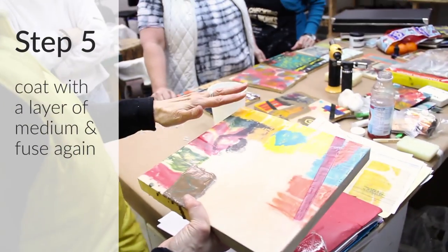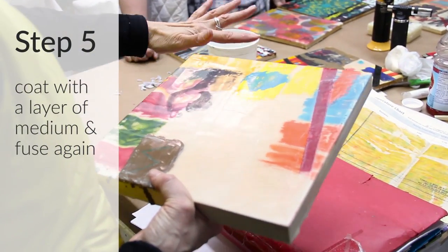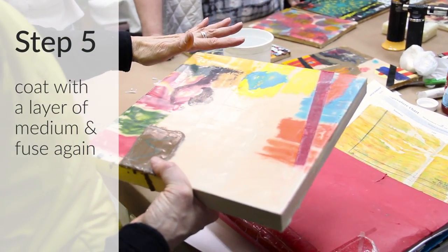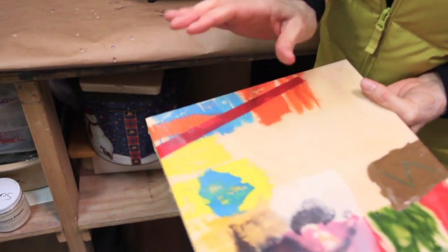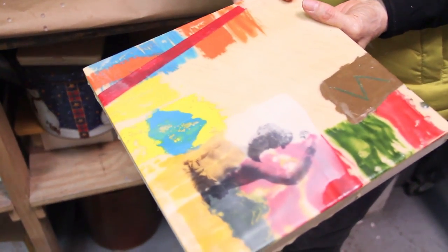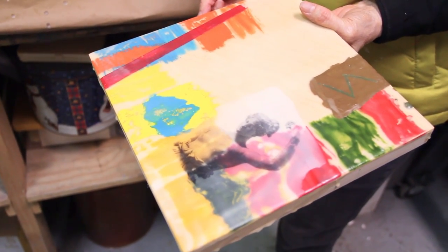Now what should happen next is a medium should be brushed over that. And what I'm going to do is just give a coat to her. So now it's under. And that dries clear. That dries clear and I'll fuse it. And so she'll be visible.